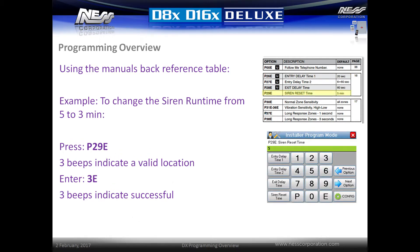Another example: to change the siren runtime from 5 minutes to 3 minutes, press P, 2, 9, E. Three beeps will indicate a valid location and the current value will be displayed. Enter 3, E and three beeps will indicate a successful entry. One long beep will indicate an incorrect entry.